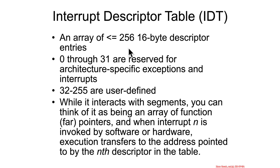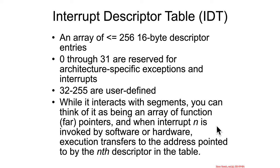The IDT is an array of less than or equal to 256 16-byte descriptors, based on that limit field. Entries 0 through 31 are reserved by Intel for their own usage for architecture-specific exceptions and interrupts, whereas 32 and above are values that an operating system can use for whatever. Conceptually, it's helpful to think of the IDT like a big table of function pointers — interrupt 0 will have a function pointer, interrupt 1 will have a function pointer, and so on. When interrupt 0 fires, it goes to the function pointer pointed to by interrupt 0.